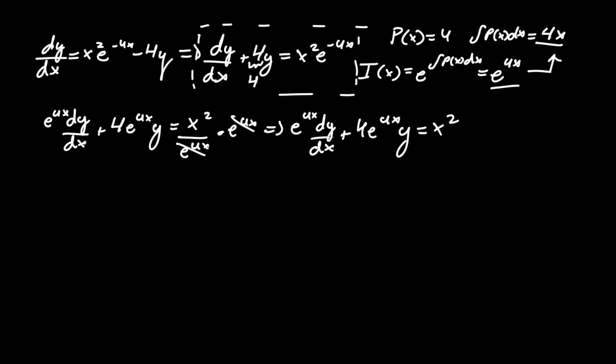Now, all we have to do is factor out the differential term dy/dx, and create the product rule. By that, I mean, let's write dy/dx, and we're going to have to create a product rule in which we get this term. Well, all we have to do is simply just put in I of x, which is just e to the 4x, times y.